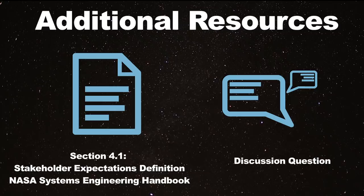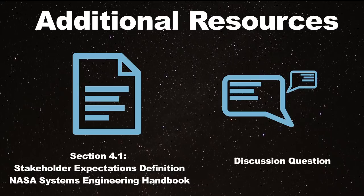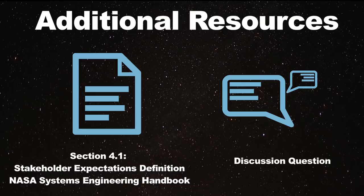That's an example from end to end of going through the whole scoping exercise for a mission — in this case, the Apollo mission. Now click on the icon to read Section 4.1, Stakeholder Expectations Definition, of the NASA Systems Engineering Handbook. It'd also be helpful to go to page 31 in the handbook to view the diagram of how stakeholder expectations fit into the broader aspect of system design. Once you've completed that reading, please visit the discussion forum.